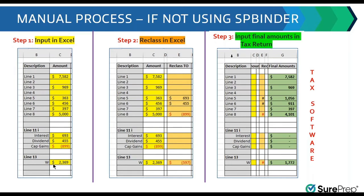With ShowProps technology, you can handle step 1 using our optical character recognition, which is OCR reading capabilities. Step 2 you can handle using this newest K-1 reclass feature. And finally, step 3 by exporting the SP Binder data to tax software in two clicks. So let's see how this automation really works for you.